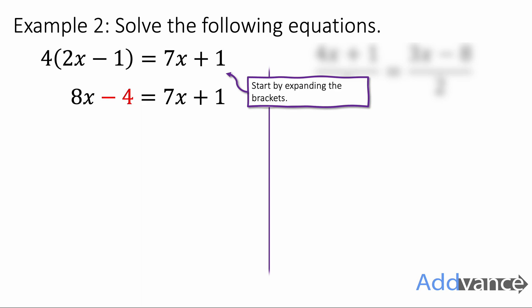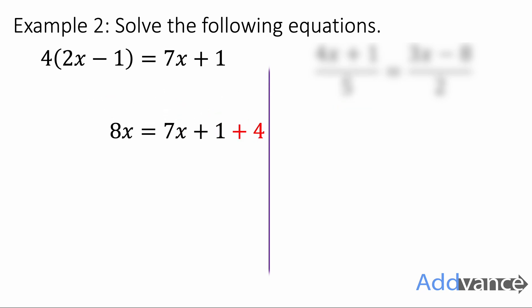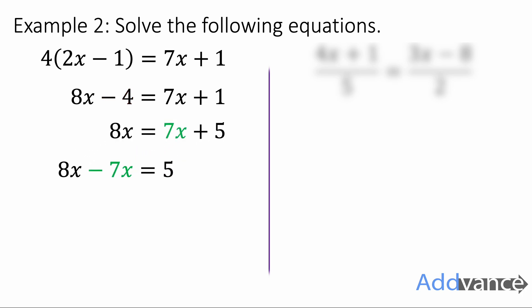The opposite of minus 4 is going to be plus 4, and we get 7x plus 5 on the right hand side. Then we subtract 7x from both sides and we get 8x minus 7x equals 5, which is just x equals 5, and that's the final answer.